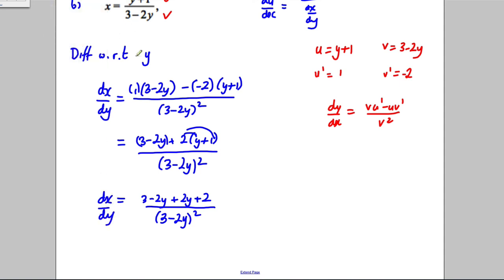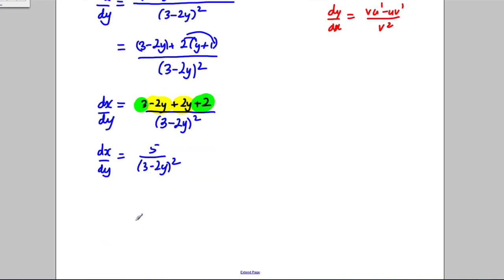The negative 2y and 2y cancel, and 3 plus 2 equals 5, so dx/dy equals 5 over 3 minus 2y all squared. Therefore dy/dx in terms of y equals 3 minus 2y squared all divided by 5.